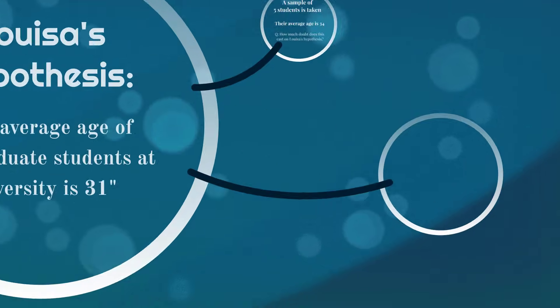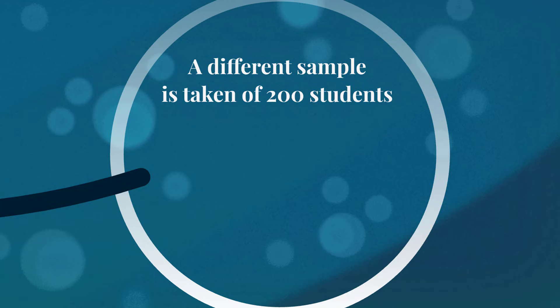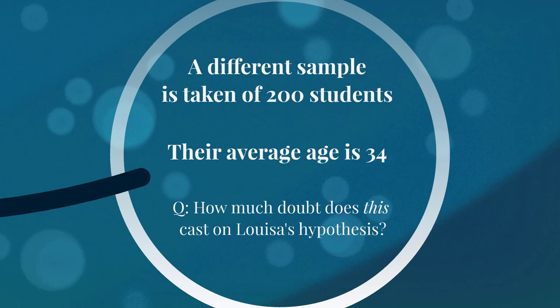But let me ask you this. Imagine we did the same thing, but took a sample of 200 students and found that the average age was 34. If I asked you again, how much doubt this casts on Louisa's hypothesis, you're going to start thinking that, yeah, that is casting a lot of doubt. The average age hasn't changed of our sample, but what has changed is the number of observations in the sample. So we now have 200 students in the sample. What that means is that we're more confident about the precision of that sample mean. And I think intuitively you can kind of see this work. Imagine you had a huge sample and found the average age was 34. You're going to start thinking, we've pretty much got almost the entire campus here. The true average age is probably not going to be 31 anymore.